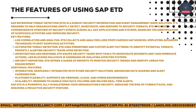Key features include: Log Correlation and Analysis — ETD collects and analyzes logs from various SAP sources, employing advanced techniques to spot suspicious activities. Automated Threat Detection — ETD uses predefined and custom alert patterns to identify potential threats, promptly alerting security teams upon detection. Investigation and Response — ETD equips security teams with tools to investigate incidents and take immediate actions, like blocking malicious IP addresses or isolating affected systems.